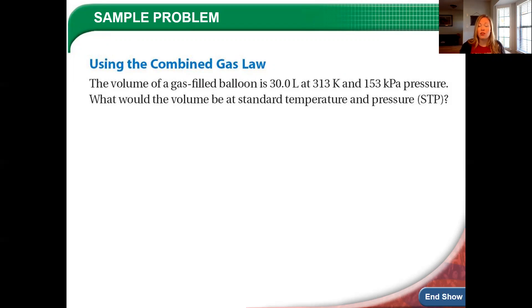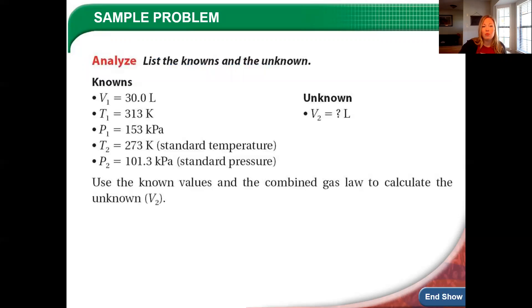So T₂ would be 273. P₂, instead of putting one atm, I would put 101.3 kPa since kPa is already given in the problem. So what we're solving for here is V₂, our unknown. You can make a list like this, or you can circle them in the problem and label them there.